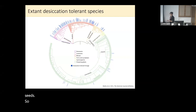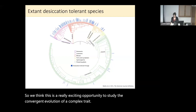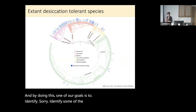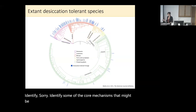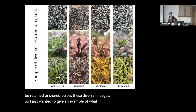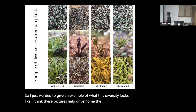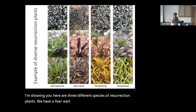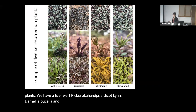We think this is a really exciting opportunity to study the convergent evolution of a complex trait, and one of our goals is to identify some of the core mechanisms that might be retained or shared across these diverse lineages. To illustrate this diversity, I'm showing three different species of resurrection plants: a liverwort, Riccia ocellata; a dicot, Lindernia pucella; and a monocot, Xerophyta humilis.